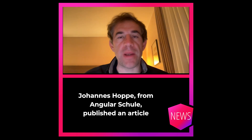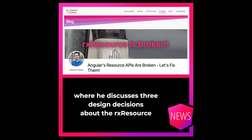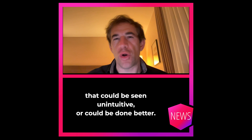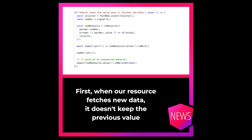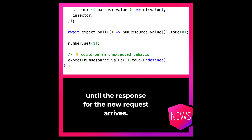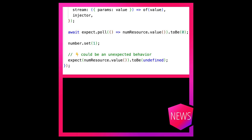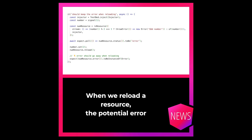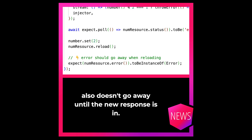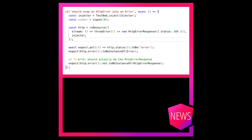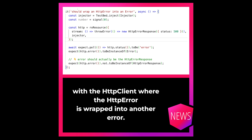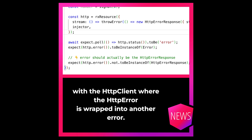Johannes Hoppe from AngularSchule published an article where he discusses three design decisions about RxResource that could be seen as unintuitive or could be done better. First, when RxResource fetches new data, it doesn't keep the previous value until the response for the new request arrives. When we reload a resource, a potential error also doesn't go away until the new response is in. And there is an issue when using RxResource with the HTTP client.